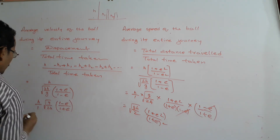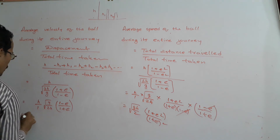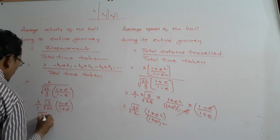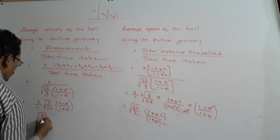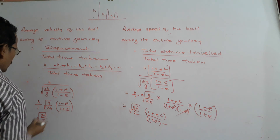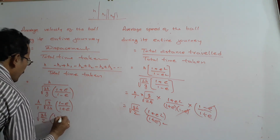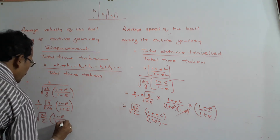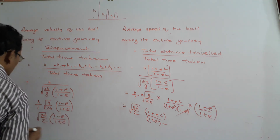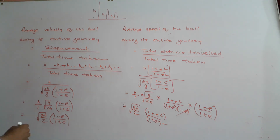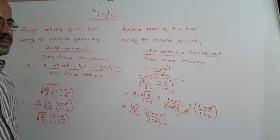The average velocity works out to the square root of gH by 2 times (1 minus e) by (1 plus e). This is the average velocity of the ball during its entire journey.